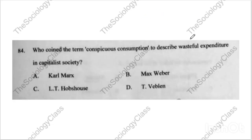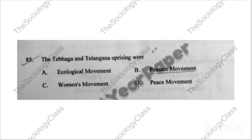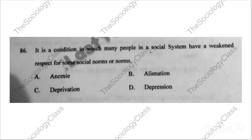Question number eighty-four: 'Who coined the term conspicuous consumption?' This question comes in Jamia every time. The correct answer is Veblen. Question eighty-five: 'Tebhaga and Telangana uprisings were...' The correct answer is B — peasant movements.